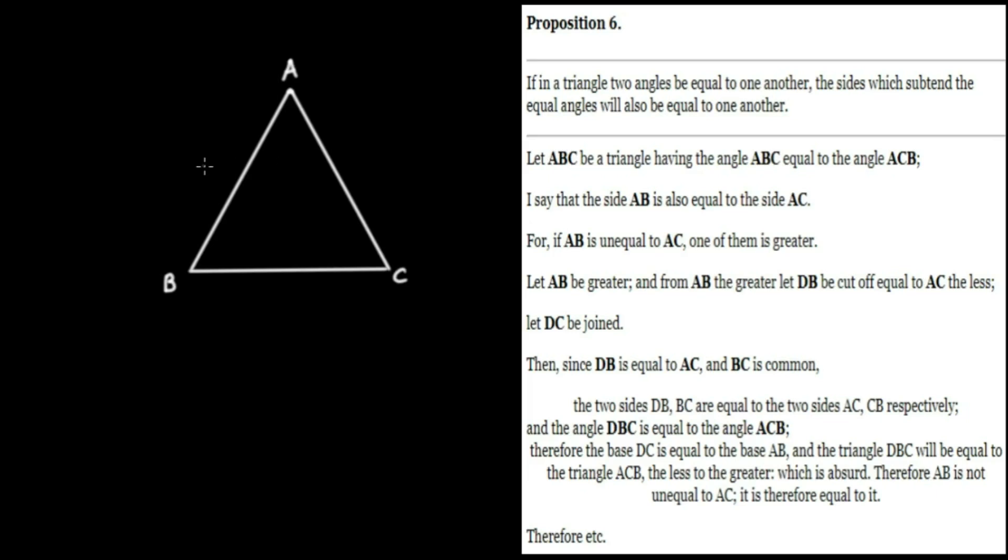In the previous proposition, we proved that if we begin with an isosceles triangle, that is, a triangle in which two sides are equal, then the subtendent angles must be the same. In Proposition 6, we're going to prove the converse. That is, if we begin with a triangle in which two angles are the same, then the opposite sides must therefore be the same, and the triangle must be isosceles.